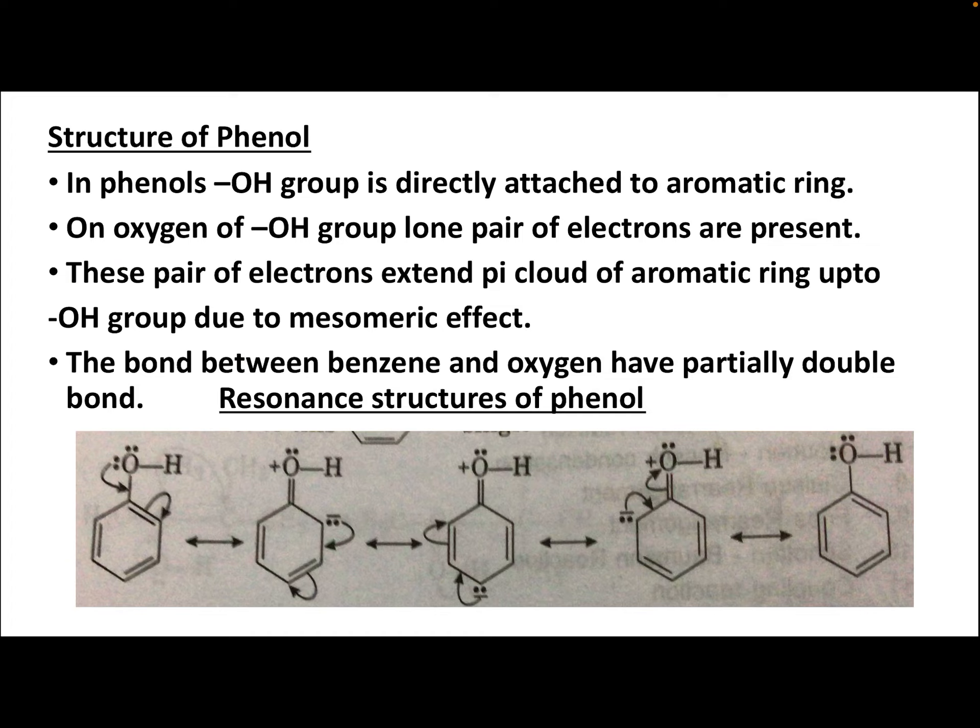Next, the structure of phenol. In phenol, the OH group is directly attached to the aromatic ring. On the oxygen of the OH group, lone pairs of electrons are present. These lone pairs extend the pi cloud of the aromatic ring up to the OH group due to the mesomeric effect. The resonance structures show that negative charge (carbanion) is formed at the ortho and para positions, and the bond between benzene and oxygen has partial double bond character.